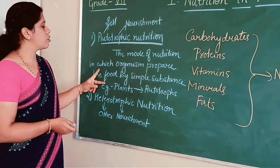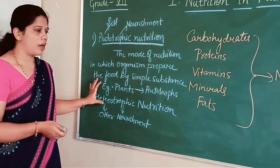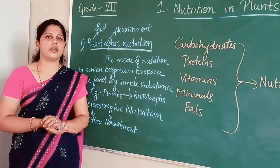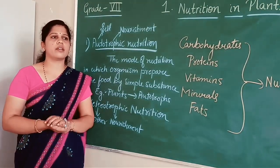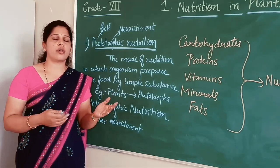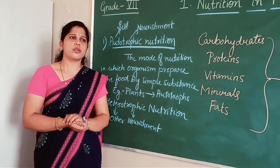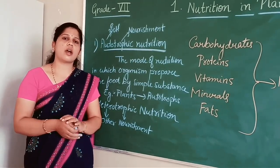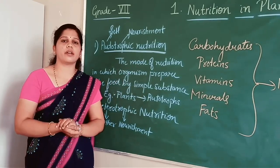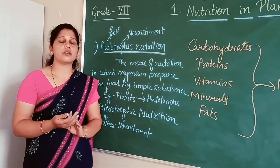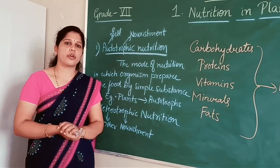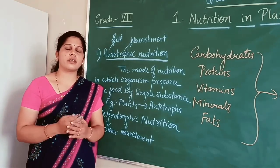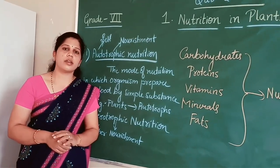So these are the two modes of nutrition: autotrophic nutrition and heterotrophic nutrition. You may be wondering where these raw materials are present, where the food factory of the plant is located, and how raw materials are transported there and used in food preparation. We will discuss all of this in the next session and get answers to all these questions. Thank you.